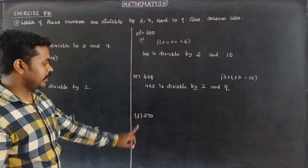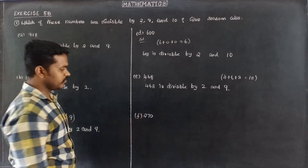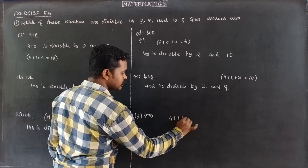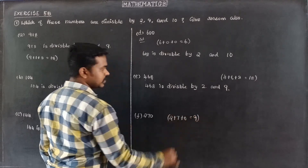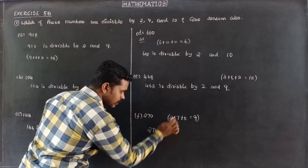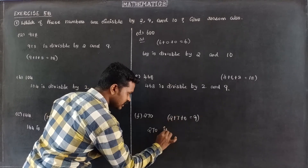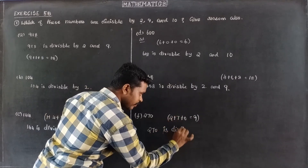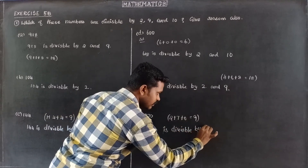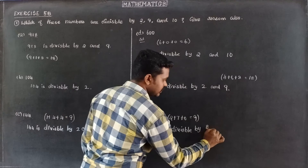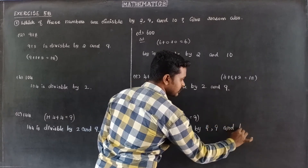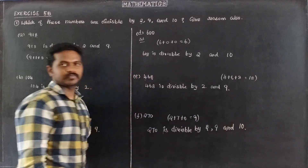Next, 270. The sum of the digits is 2 plus 7 plus 0 equals 9, which is divisible by 9. 270 is an even number, so it is divisible by 2. The last digit is 0, so it is also divisible by 10. Therefore, 270 is divisible by 2, 9, and 10.